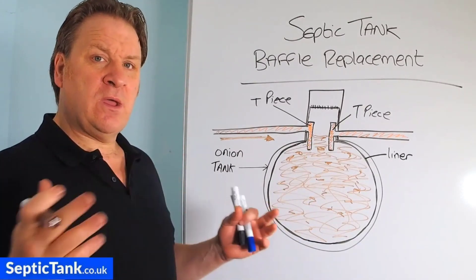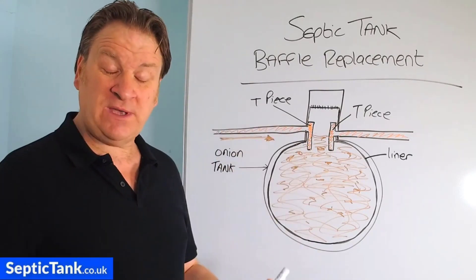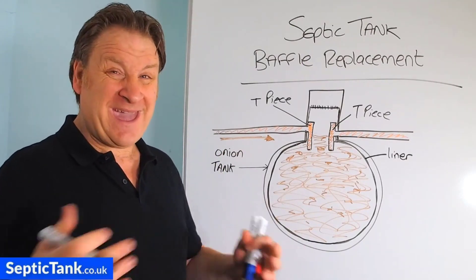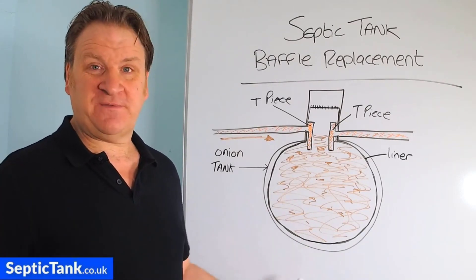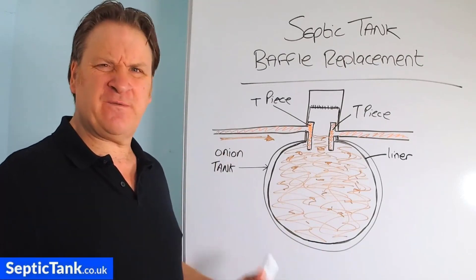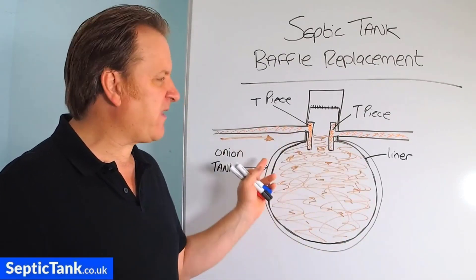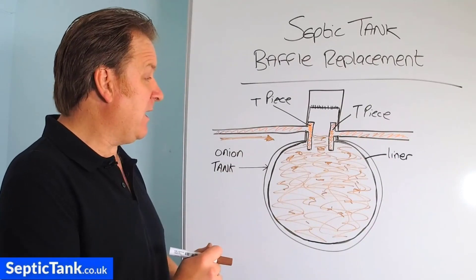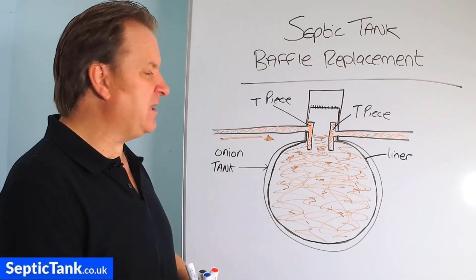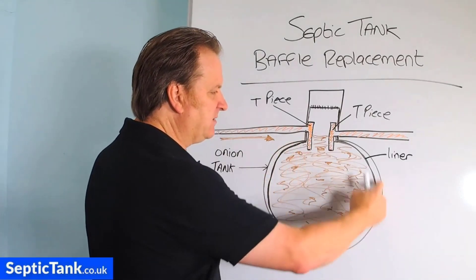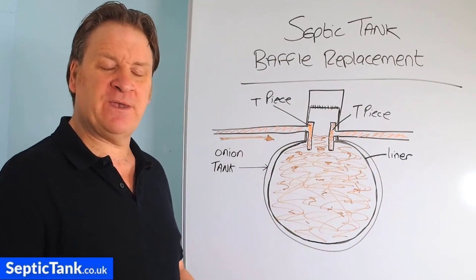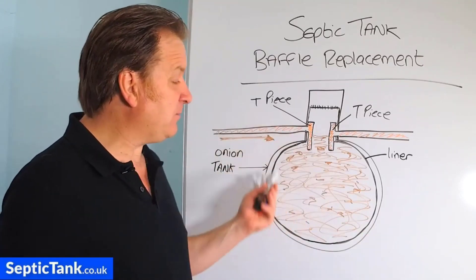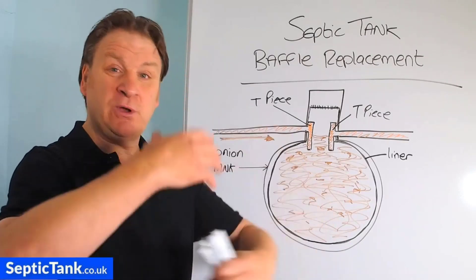So why do you need a baffle? Because in the wastewater there are number ones, number twos — poo, wee, fat, grease — and sludge made up from hair, poo, bits of skin, vegetable peelings, and lots of fat and grease from cooking. All that stuff is floating around. If it came straight into the tank and then floated straight out into the soakaway, it would block and clog the soakaway up.